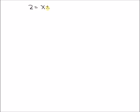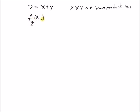Hello, welcome. In this short video, I will illustrate that the PDF of a sum of two independent random variables is equal to the convolution of the marginal PDFs. So, given Z equal to X plus Y, where X and Y are independent random variables, we want to prove that the PDF of Z is equal to the PDF of X convolved with the PDF of Y. This is our goal.